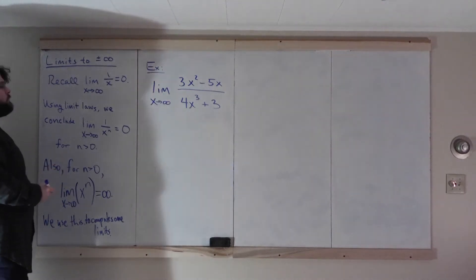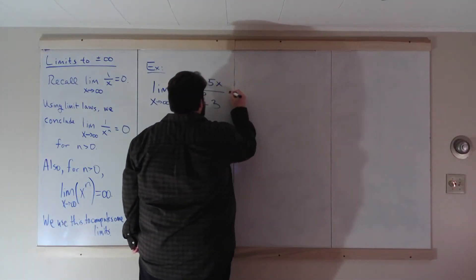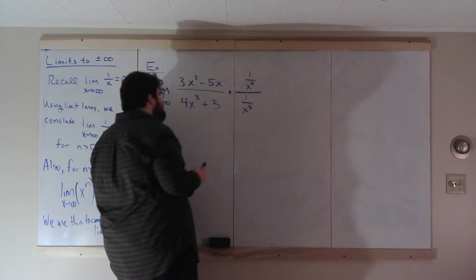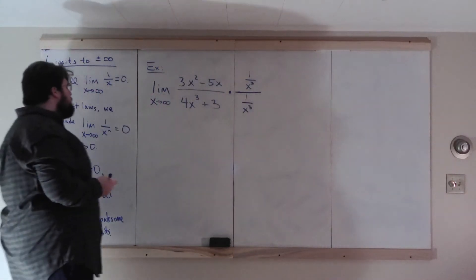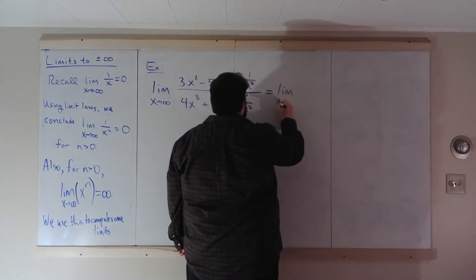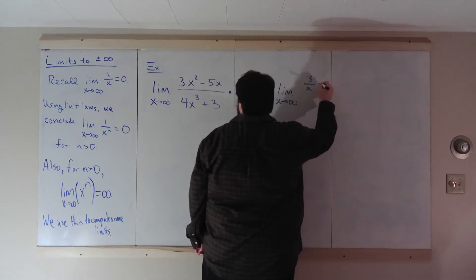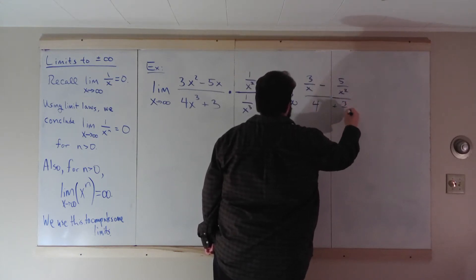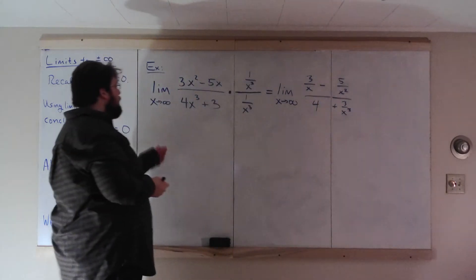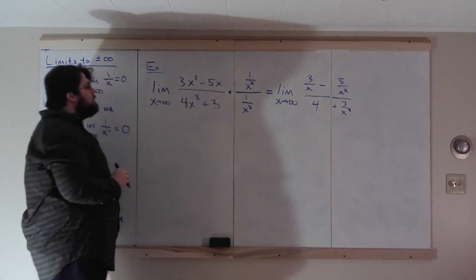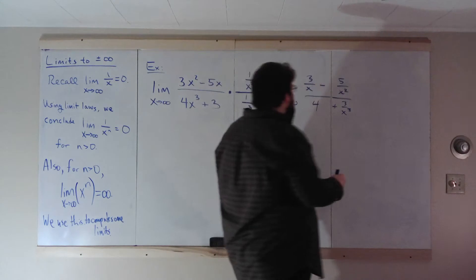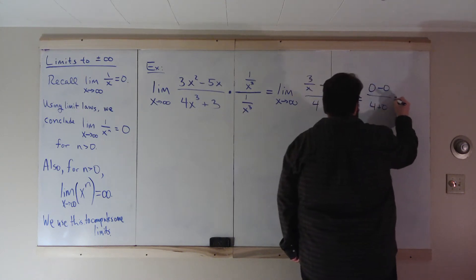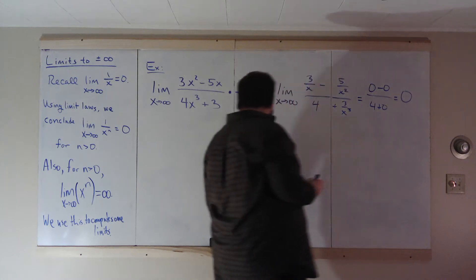Another rational function: as x goes to infinity, you get infinity over infinity, so you can apply L'Hôpital's Rule here twice and arrive at your answer. Or follow the process: the largest exponent on the bottom is 3, so divide everything by x³. You get (3/x − 5/x²)/(4 + 3/x³), and as x goes to infinity that gives 0 − 0 over 4 + 0, which reduces to 0.